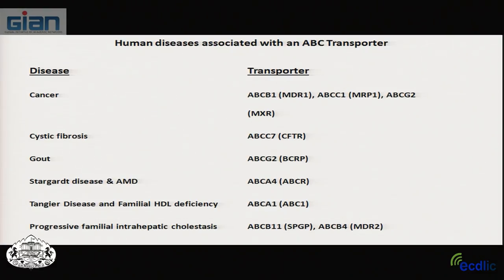Many diseases are associated with ABC transporters. In cancer-related drug resistance, the difference is overexpression of transporters rather than mutations. In other diseases like cystic fibrosis, there are mutations or multiple mutations in the CFTR protein. Gout is linked to mutations in ABCG2, age-related macular degeneration to ABCA4, and Tangier disease and familial HDL deficiency are linked to defects in cholesterol metabolism.